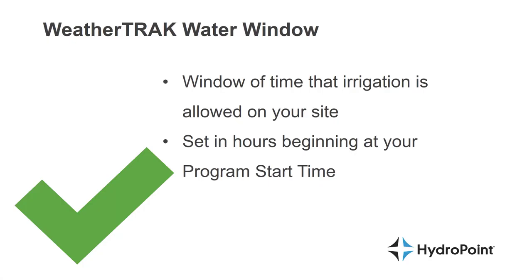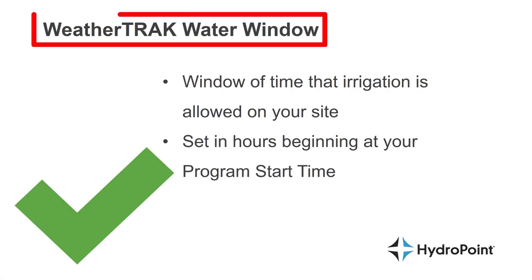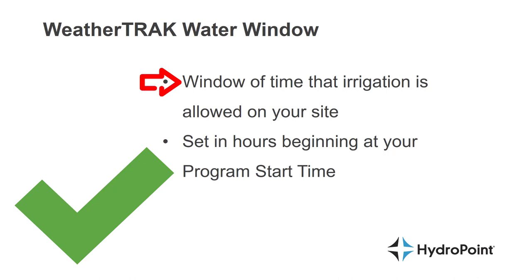In WeatherTrack terms, a water window is defined as the window of time that your irrigation is allowed to run on your site, which is one of the things that's important to manage for local water restrictions. With the water window, we set the number of hours that your irrigation is allowed to run, beginning at that program start time.